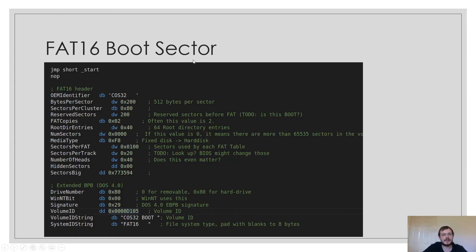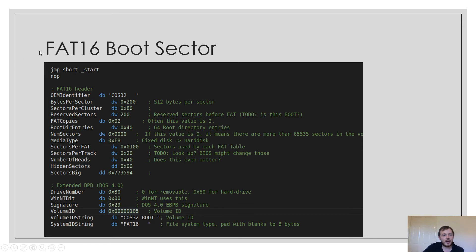This is the FAT16 boot sector format. The very first thing you see is a short jump — this is assembly. This is a short jump to the start label, which ensures that we jump over the FAT16 header. We also require a no-operation after our short jump — this is the format the file allocation table expects. Next comes all the header information, where we store the bytes per sector.